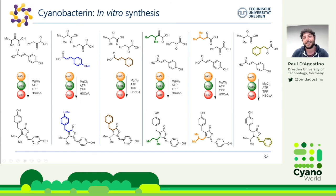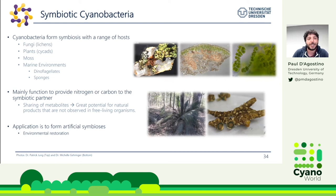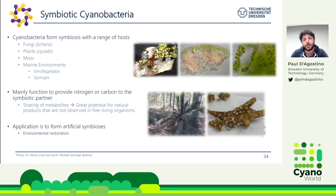Lastly, I will talk about what I plan to work on in the future with DiPaC: particularly symbiotic cyanobacteria. Cyanobacteria can form symbioses with a range of hosts, including lichens, plants such as cycads, mosses, and in marine environments, dinoflagellates and animals. Their main function is to provide nitrogen and carbon to the symbiotic partner, meaning they share metabolites, which gives potential for also sharing natural products. It is known that symbiotic organisms produce very specific natural products not found in free-living systems, and we think symbiotic cyanobacteria will be the same.